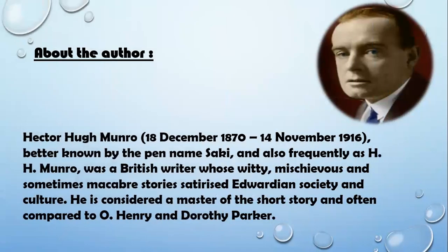Moving on to the author, we'll see about H.H. Munro. His full name is Hector Hugh Munro. He was born in 1870 and died in 1916. He was better known by the pen name Saki. He was a British writer who wrote witty, mischievous, and sometimes macabre stories that satirized Edwardian society and culture. Macabre stories are those which have a lot of blood and death. He was considered a master of the short story and was compared to authors like O. Henry and Dorothy Parker.